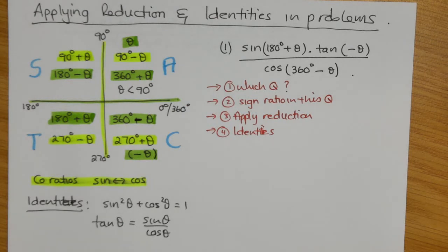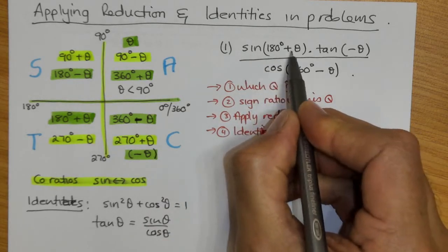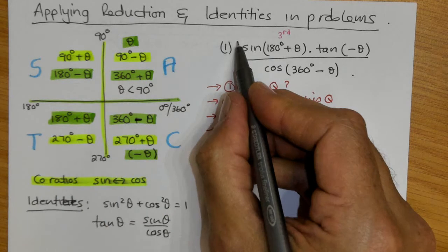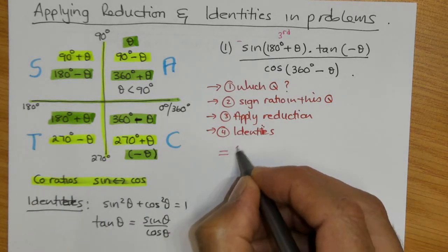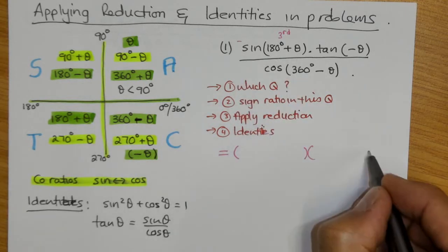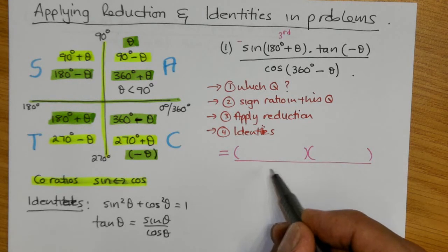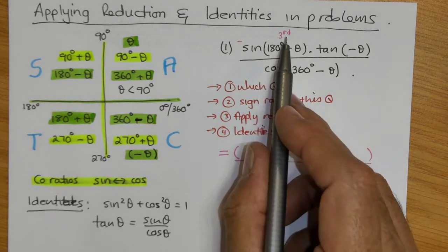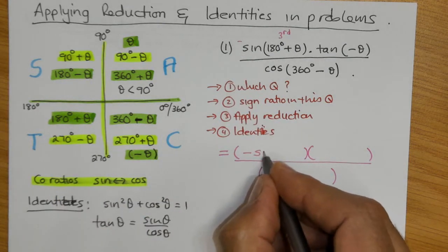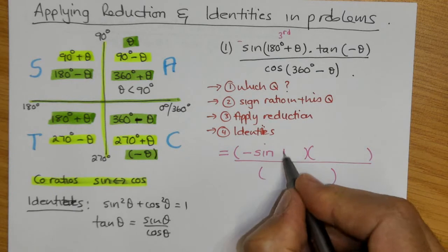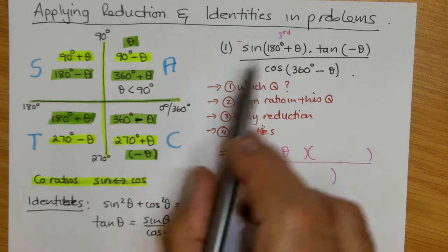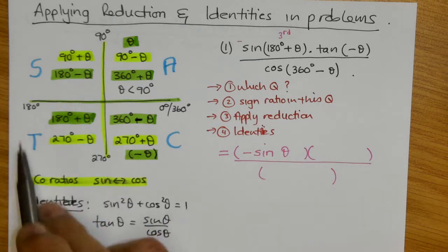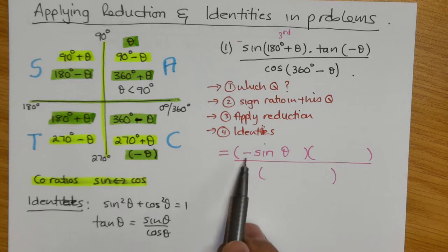Let's look at how to answer question one. There are three basic steps: first, determine which quadrant you're working in; second, determine the sign of the ratio in that quadrant; third, apply the reduction. After the reduction, you can call on identities to help simplify. The first ratio given is sine of 180 plus theta, which is a third quadrant angle. In the third quadrant, sine is negative, so this becomes minus sine of theta.